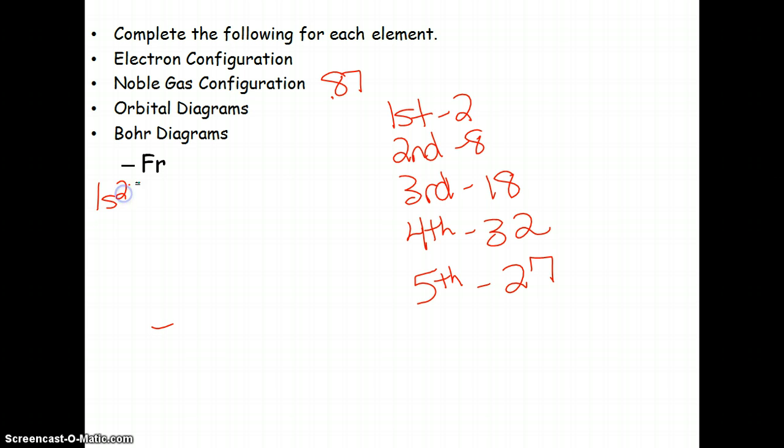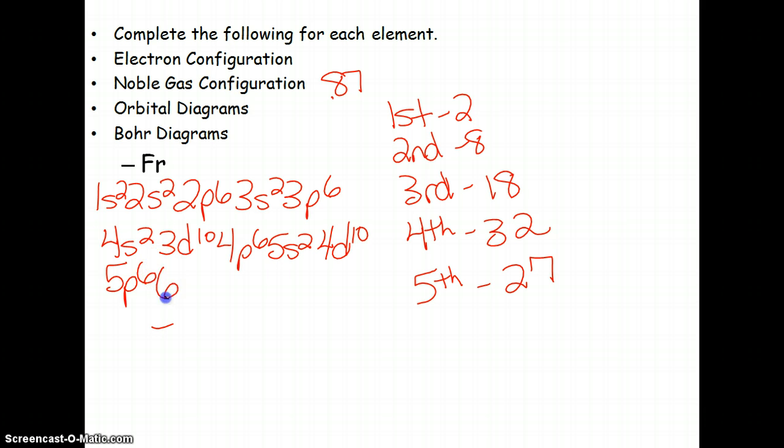Electron configuration for Francium. I'm going to be writing for a while, but this is basically what we're looking at. So we've got 1s2, 2s2, 2p6, 3s2, 3p6, 4s2, 3d10, 4p6, 5s2, 4d10, 5p6, 6s2. And then after 6s2, you go down to 4f14, back up to 5d10. Then you've got 6p6, and then you end on 7s1.